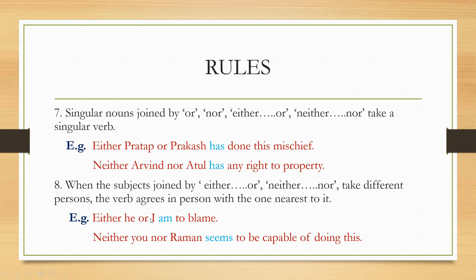If I replace the words — putting 'I' first and 'he' second — the verb will be 'is': 'Either I or he is to blame.' Similarly, 'Neither you nor Raman seems to be capable of doing this.' Here 'you' is second person and 'Raman' is third person. Since 'Raman' is nearer to the verb, the verb agrees with Raman, which is third person, so the verb becomes 'seems'. If I swap them: 'Neither Raman nor you seem to be capable of doing this.'